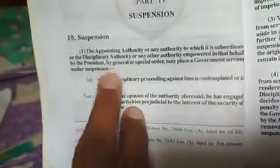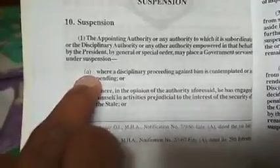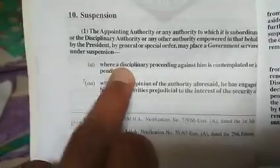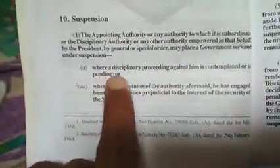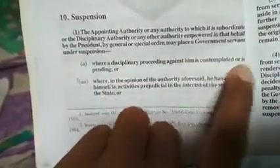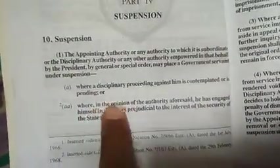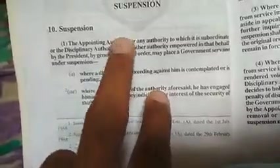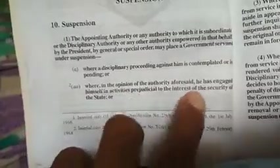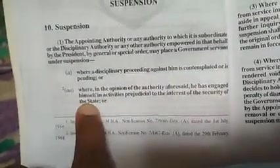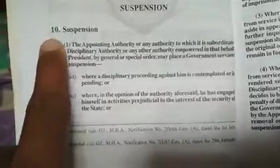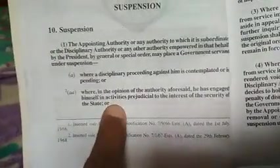Sub-clause (a) of clause 1 of Rule 10 gives the first reason: where a disciplinary proceeding against him is contemplated or is pending. Sub-clause (aa) gives the second reason: where in the opinion of the authority aforesaid, he has engaged himself in activities prejudicial to the interest of the security of the state.